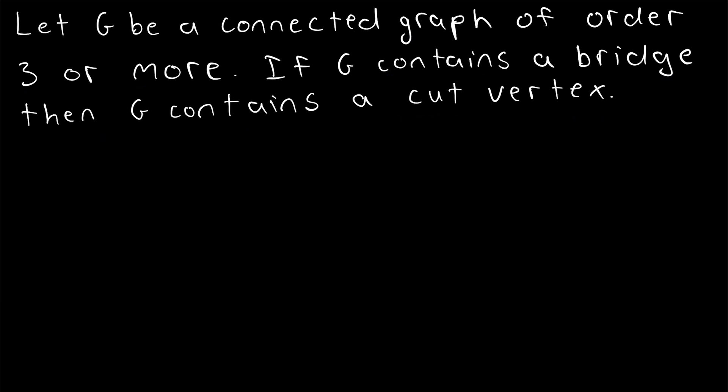This is a straightforward corollary of a theorem that we proved in a recent lesson, stating that an end vertex of a bridge is a cut vertex if and only if the degree of that vertex is greater than or equal to 2. So, we'll use that theorem, and it will help us pretty easily prove this corollary.